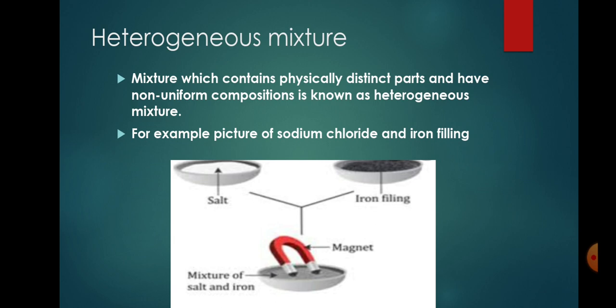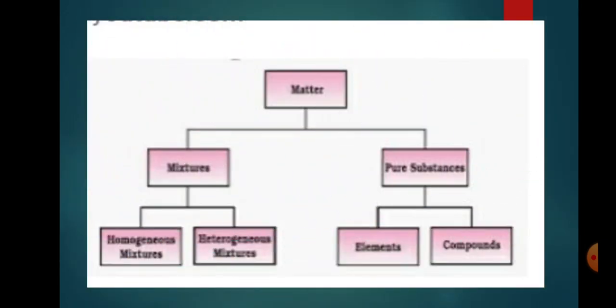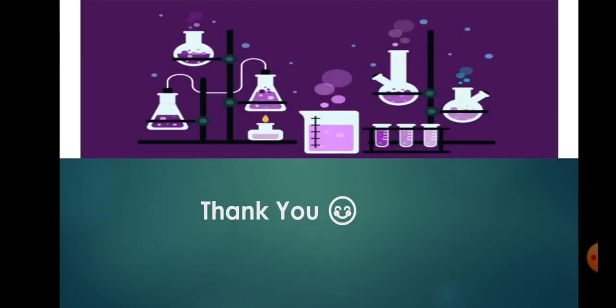So students, these were the types of mixtures. Today we have seen that matter is of two types: pure substance and mixture. Mixture is of two types: homogeneous mixture and heterogeneous mixture. Pure substance is further divided into elements and compounds, which we will see in the next lecture.